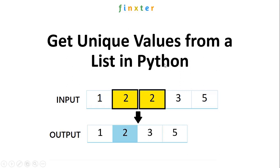Let's understand the question first. Let's say that this is the given list. As you can see, this list has the values 1, 2, once again it has 2, 3 and 5. So the output list should be a list consisting of the unique values made from this input list. That unique list is going to be 1, 2, 3 and 5 — these are the elements that will be contained within the unique list.